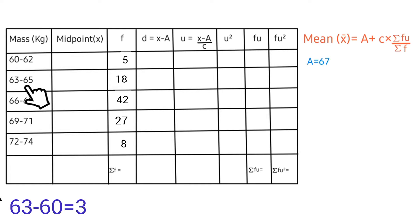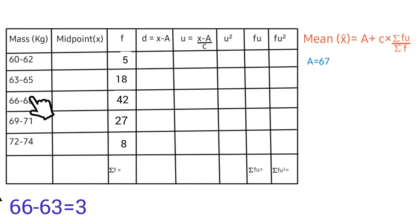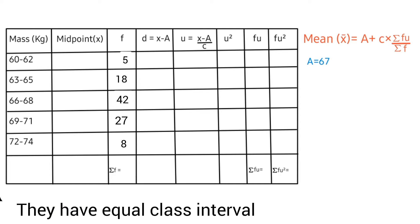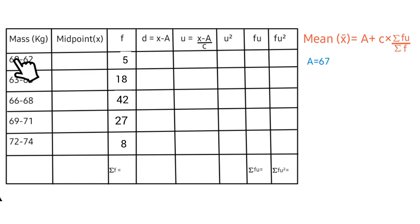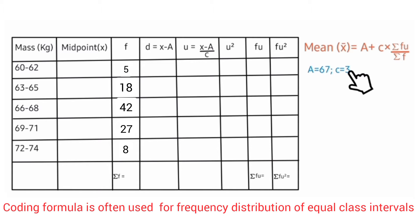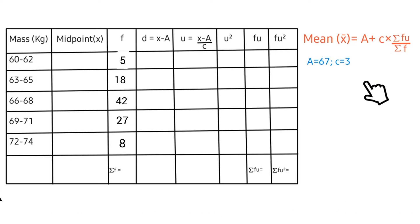The class interval c can be found by subtracting 60 from 63, or 62 from 65, or 63 from 66, and so on. We find they all have a common class interval: 63 minus 60 gives 3, and 65 minus 62 also gives 3. The coding formula is often used for frequency distributions with a common class interval. Next, we have summation fu.